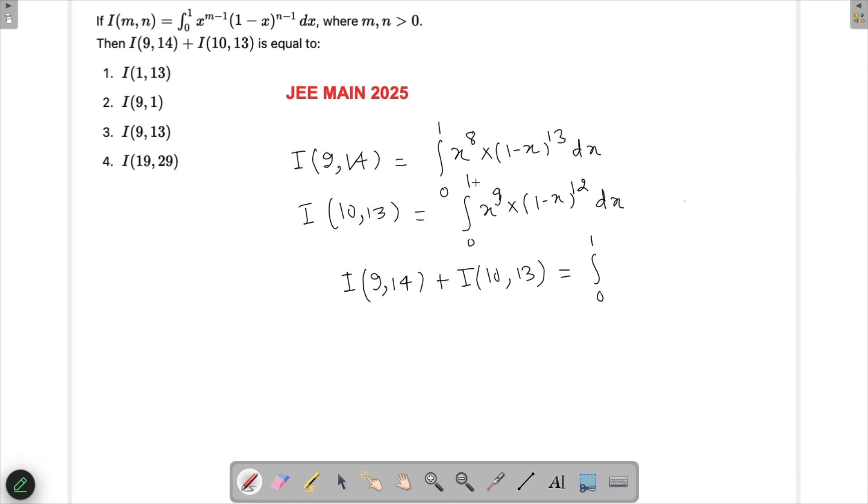Then x raised to the power 8 into 1 minus x raised to the power 13, plus x raised to the power 9 into 1 minus x raised to the power 12. I could take x raised to the power 8 common directly. Into 1 minus x raised to the power 13, and then plus x raised to the power 9 into 1 minus x raised to the power 12.